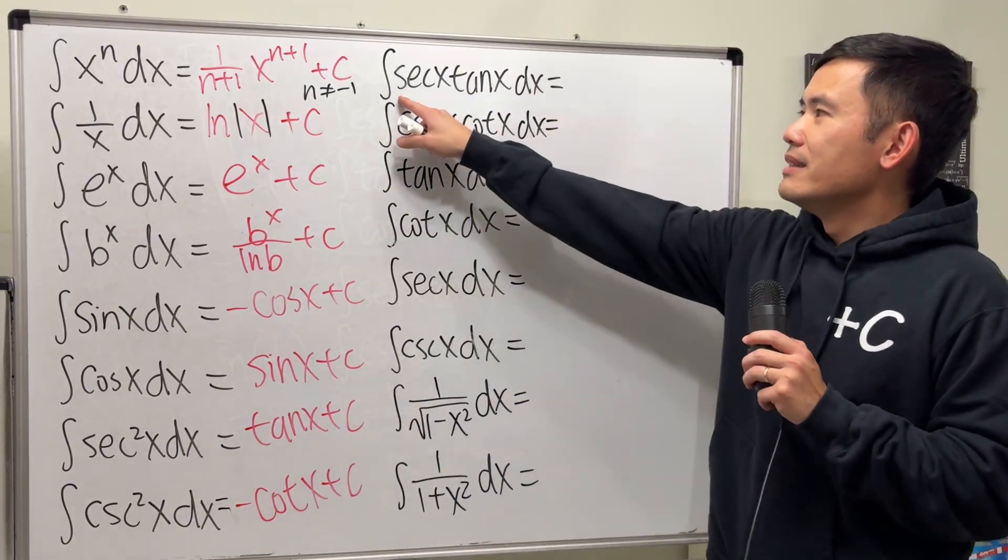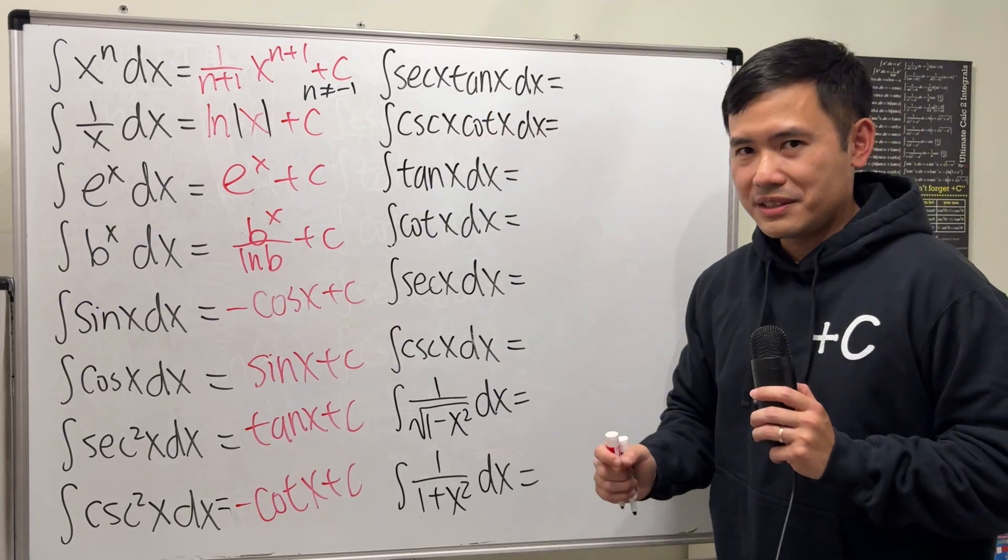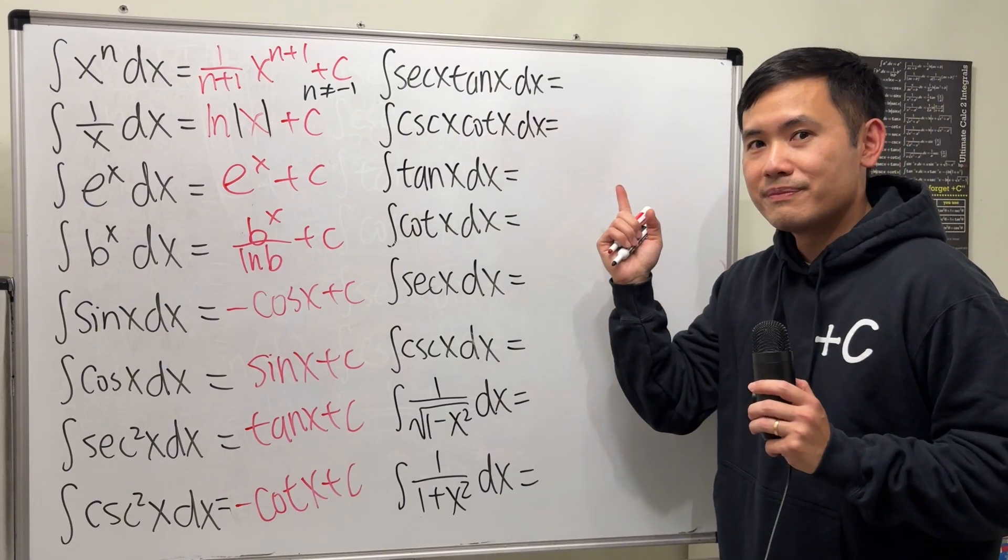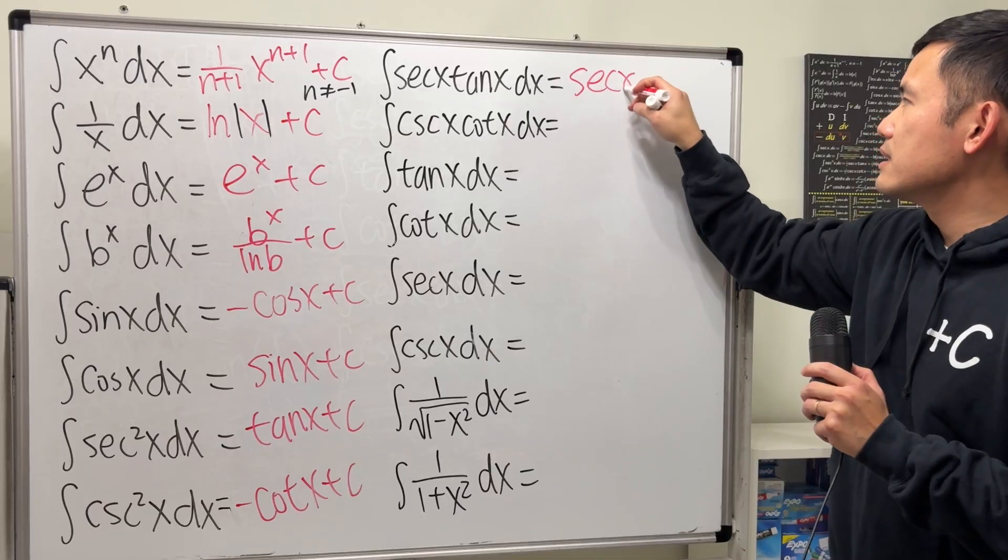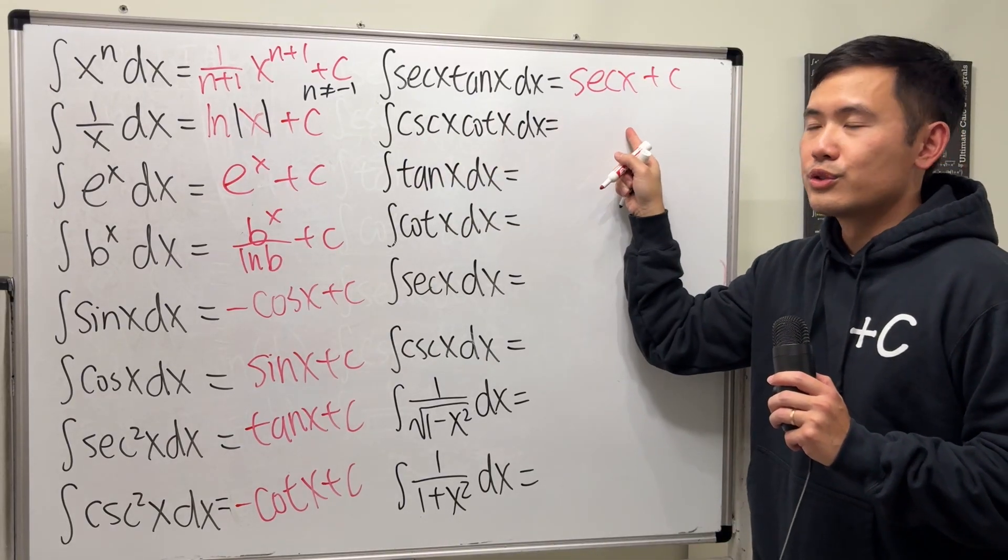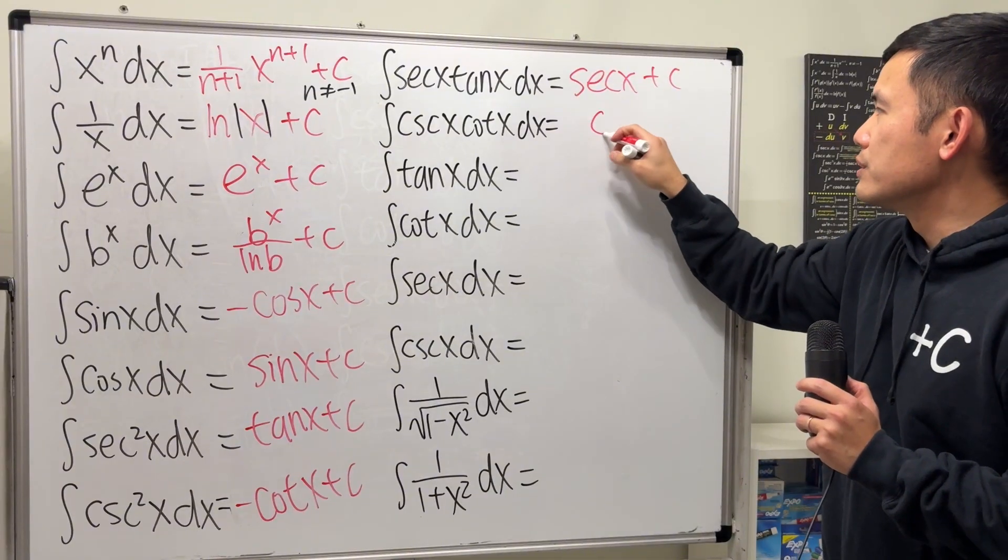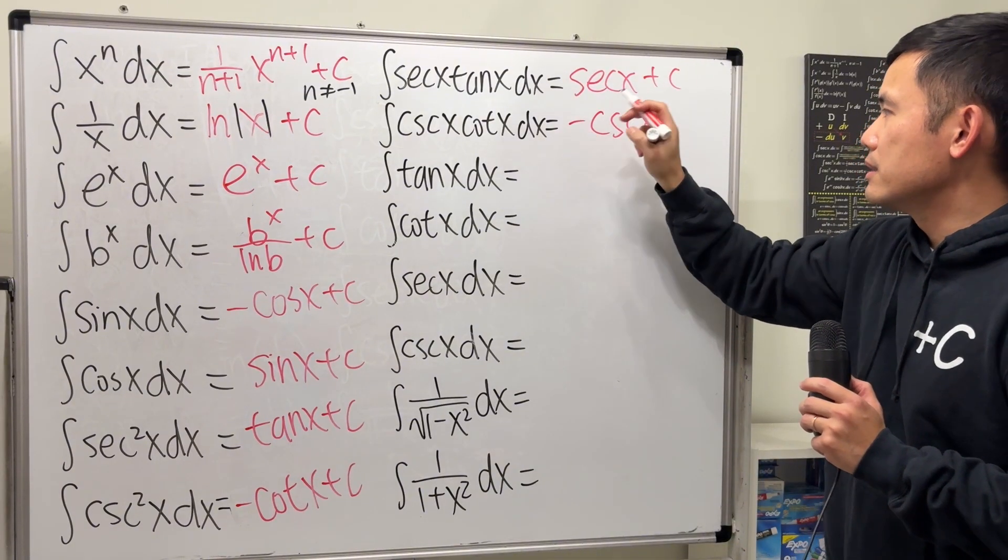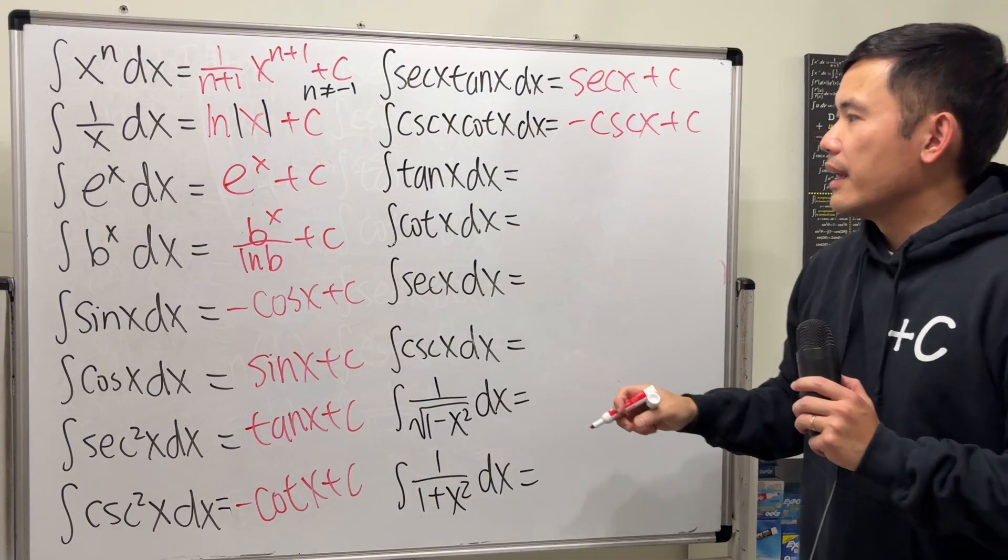The integral of secant x times tangent x - derivative of what function? Secant x, yes. So secant x plus C. Cosecant cotangent, you also have the co-version of this, which is cosecant x, but remember that would be negative.